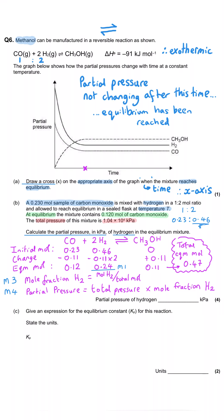The mole fraction of hydrogen is 0.24 ÷ 0.47 = 0.511, or approximately 0.51. The partial pressure of hydrogen is then this mole fraction multiplied by the total pressure, giving 5310 kilopascals — or 5.31 × 10³ kilopascals in standard form. Either form is acceptable since no specific instruction was given.